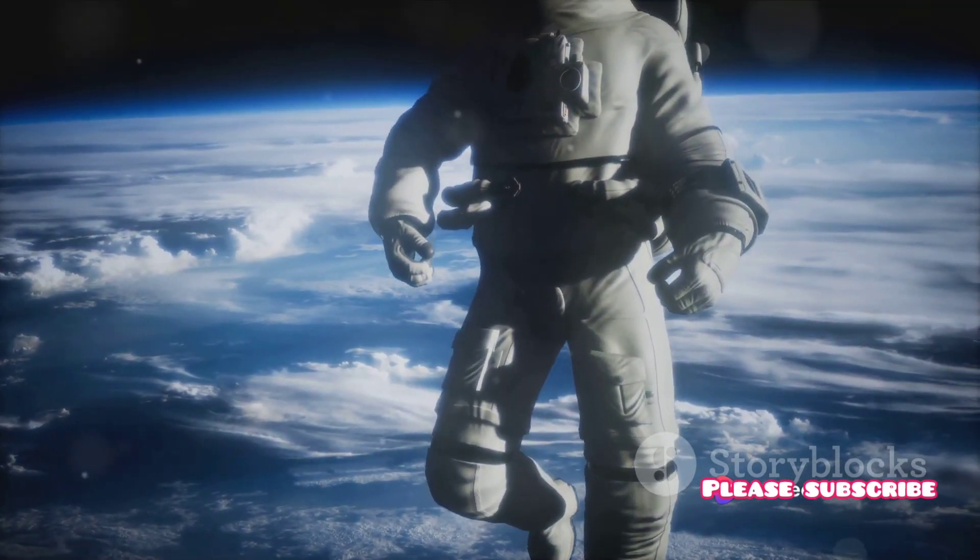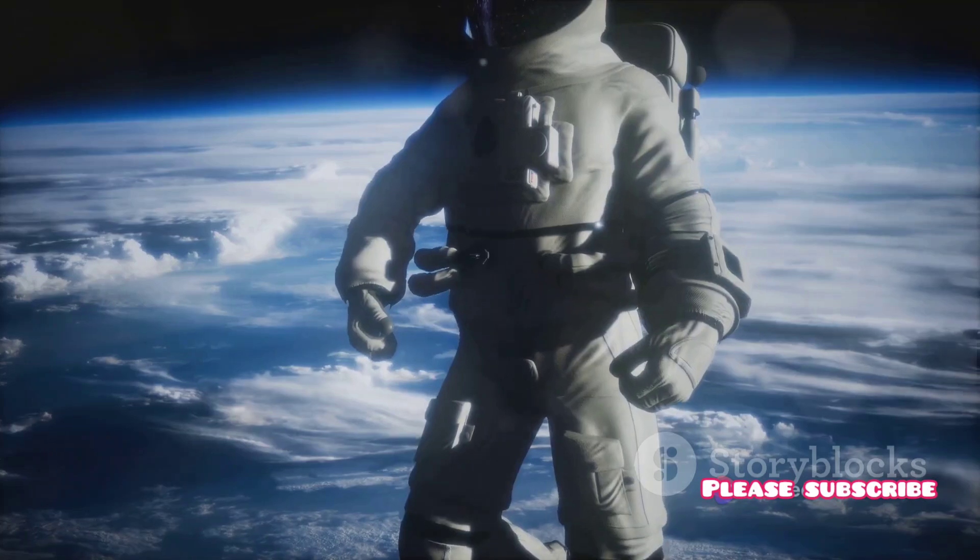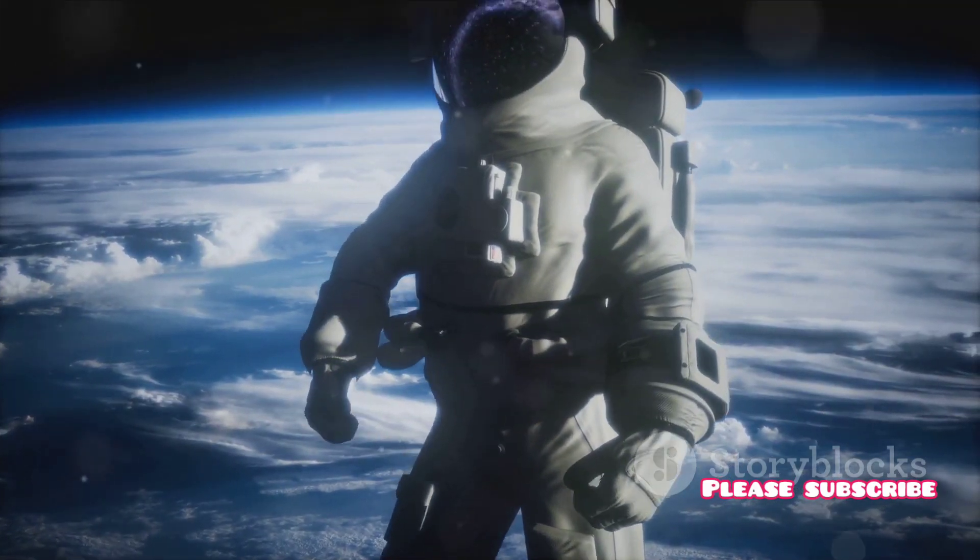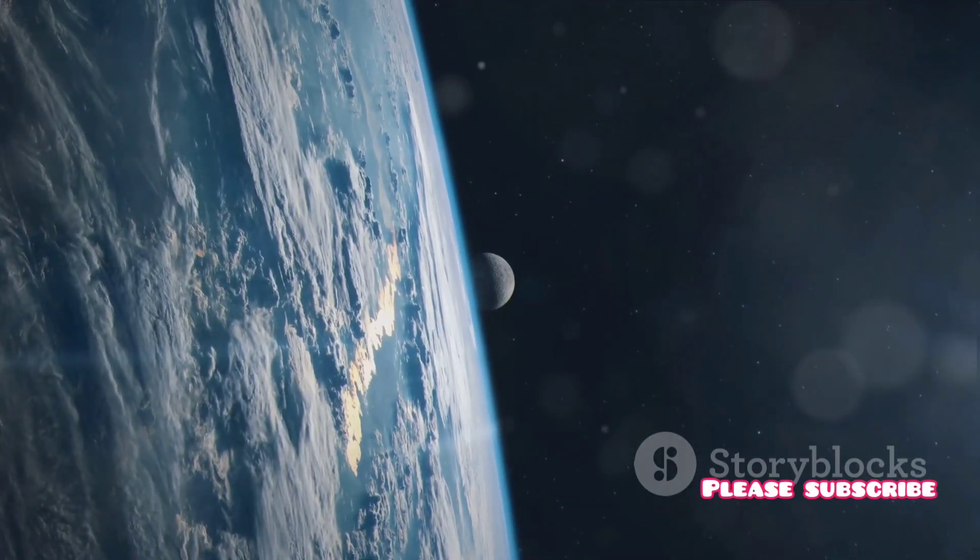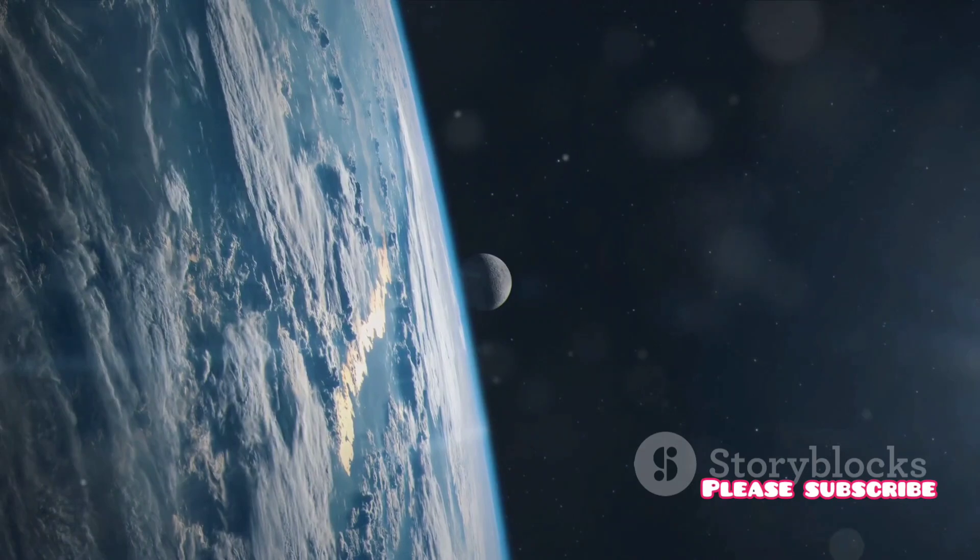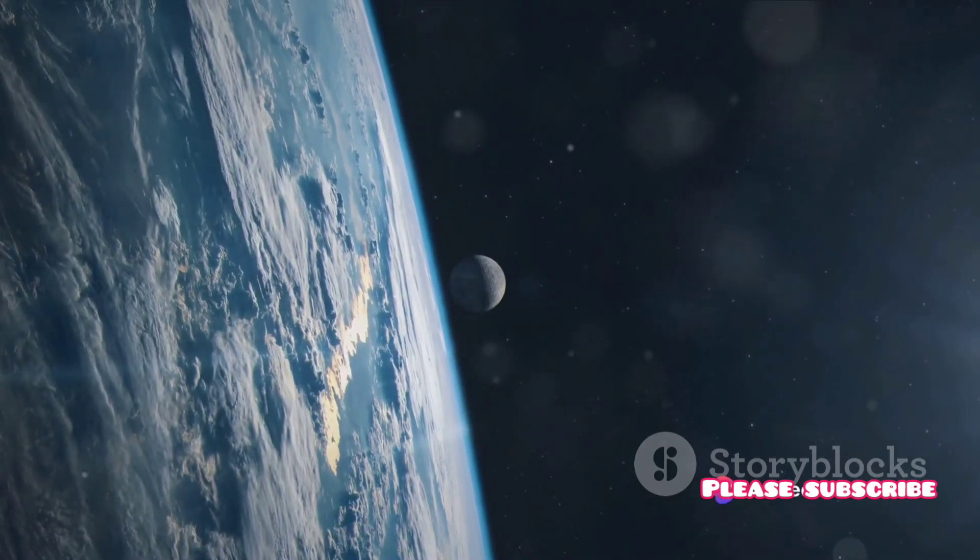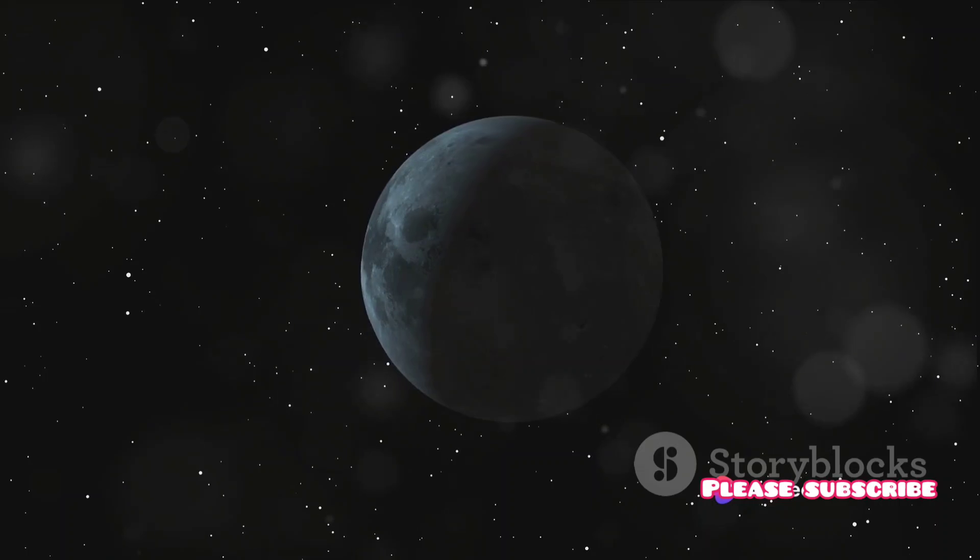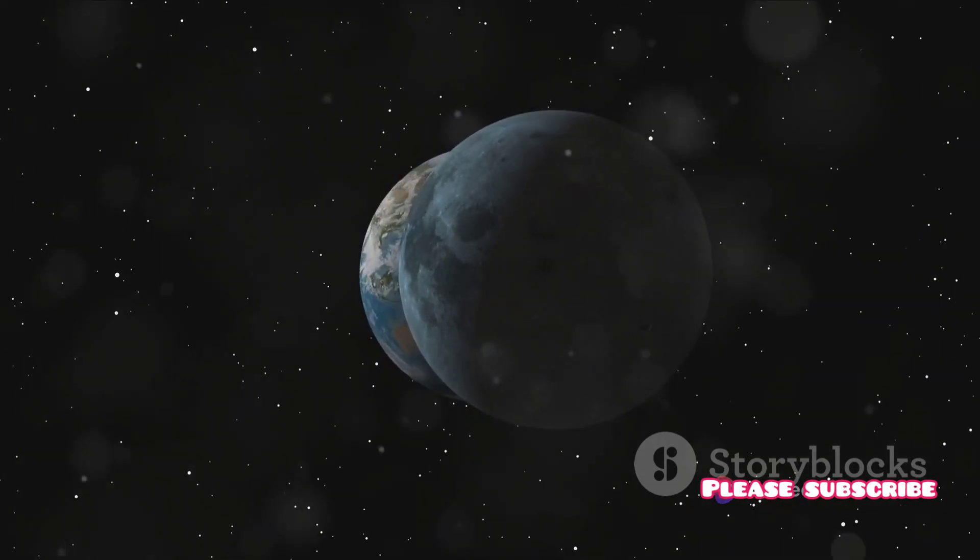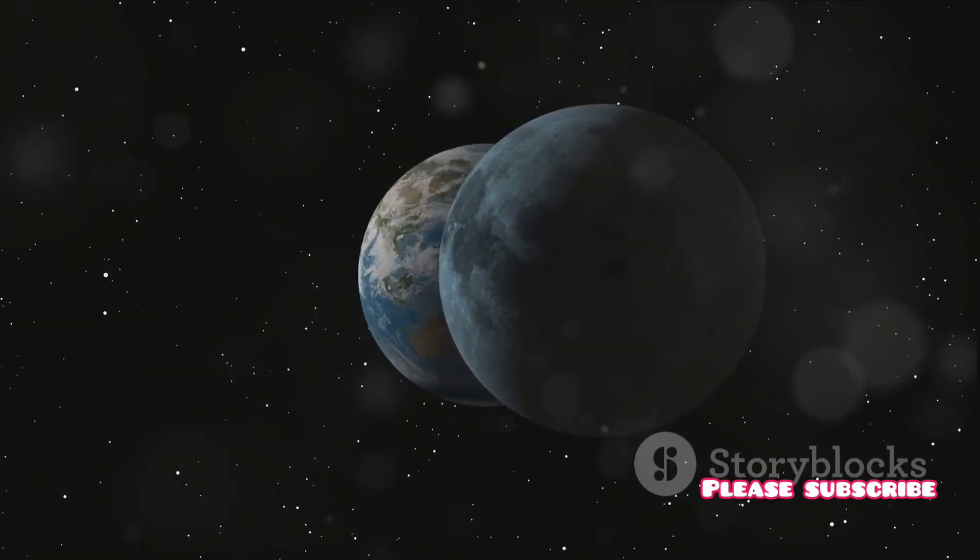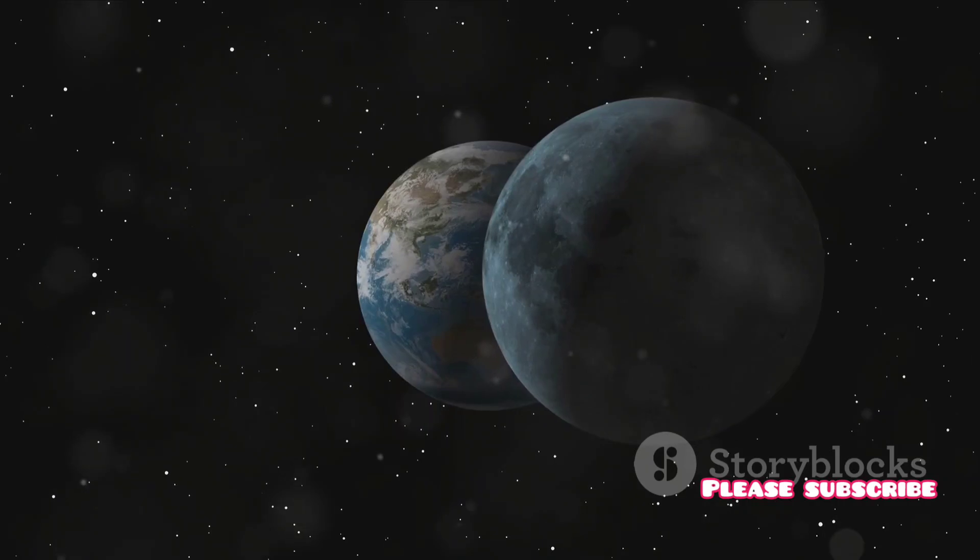And it doesn't just stop at earth's surface. Gravity's reach extends far beyond, keeping our natural satellite, the moon, in its orbit. It's gravity that tugs at the moon, keeping it from drifting off into space and causing it to revolve around the earth.